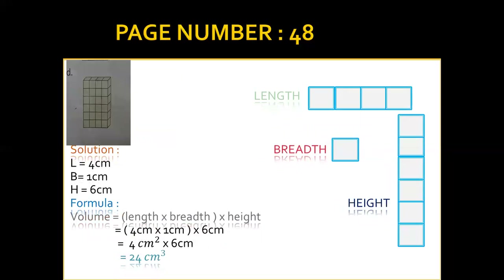The last part of question 4: there are 6 layers, so height is 6. In the front: 1, 2, 3, 4 boxes — length is 4 cm. The right side has only one box — breadth is 1 cm. Putting the values in the formula: 4 × 1 × 6 = 24 cm³ is the required volume of the given cuboid.